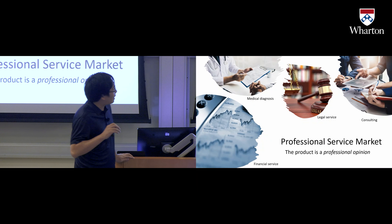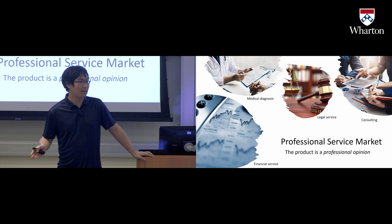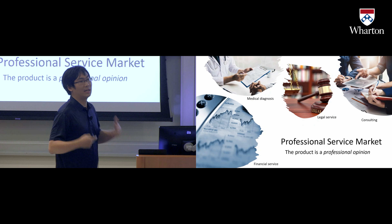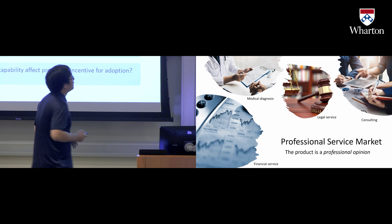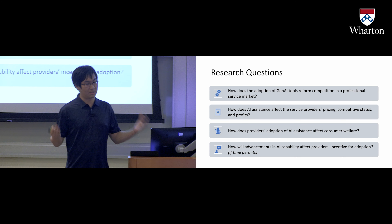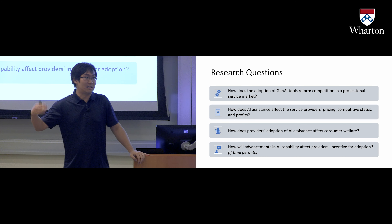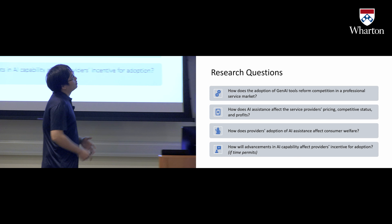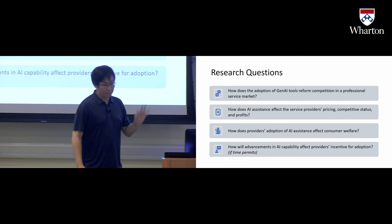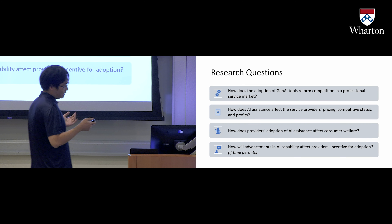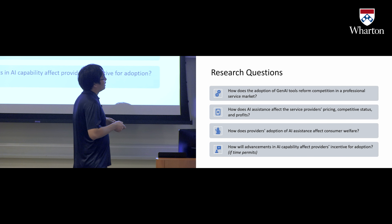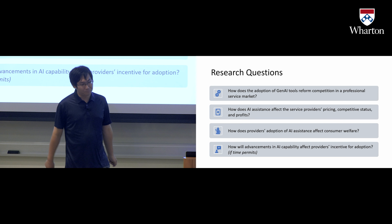In such a market, if we want to apply generative AI — for example, a consultant using generative AI in the process of generating their own opinions — what will happen? That's what we want to answer in this project. The overall question is: how does the adoption of AI tools reform competition in a professional service market? Specifically, we want to see how AI systems affect service providers' pricing, competitive status, and profits, and also explore implications for consumer welfare. If time permits, I'll cover how advancements in AI capability affect adoption decisions.